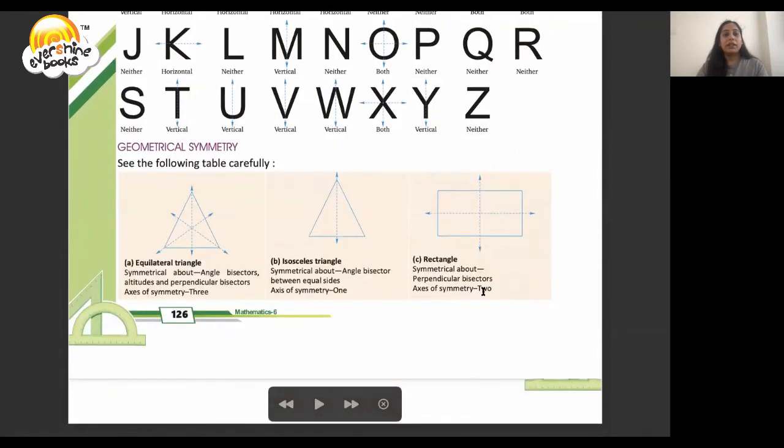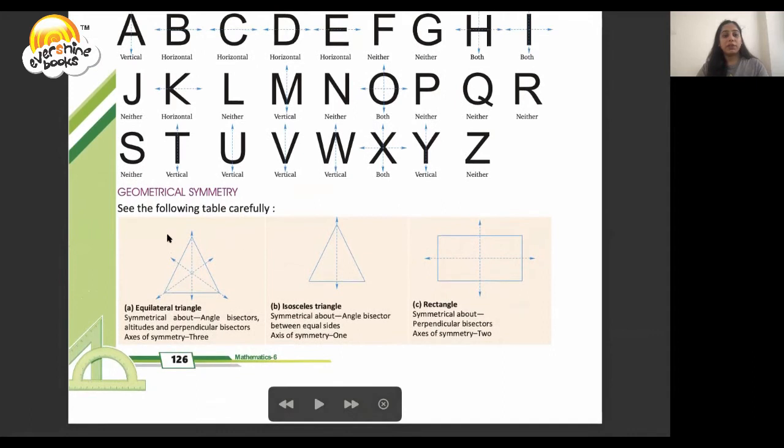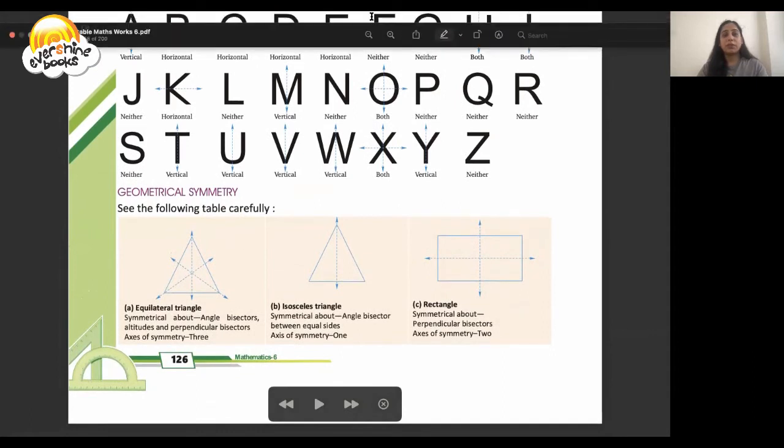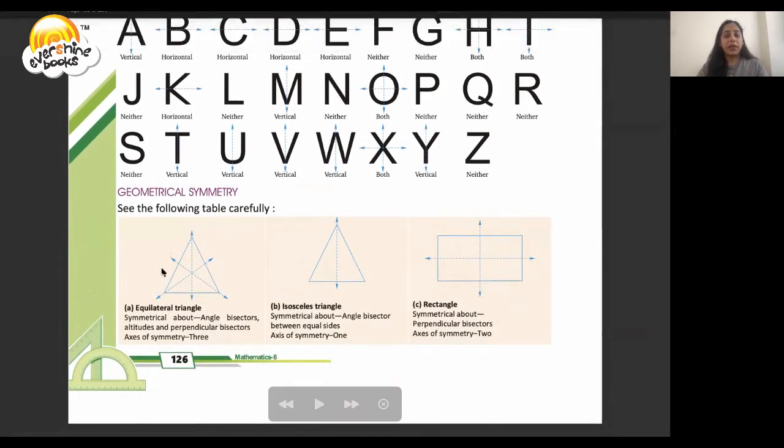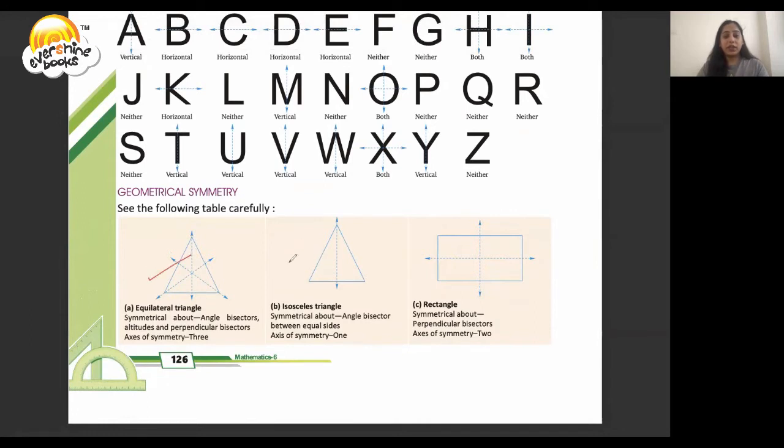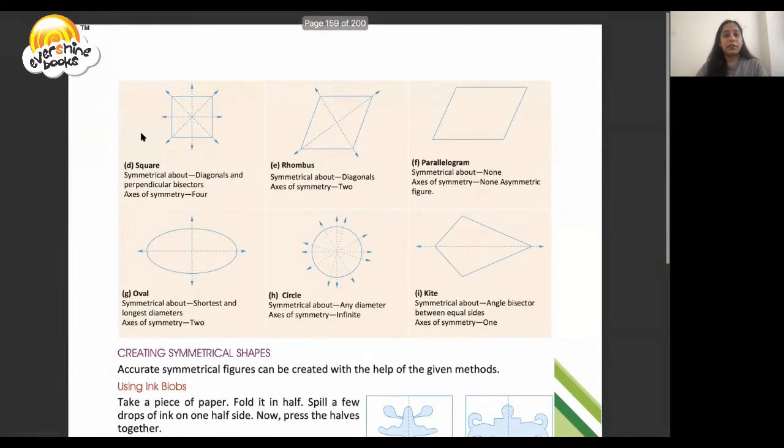Let's see some geometrical symmetry. Here we have an equilateral triangle, isosceles triangle, rectangle. Now what is our square?